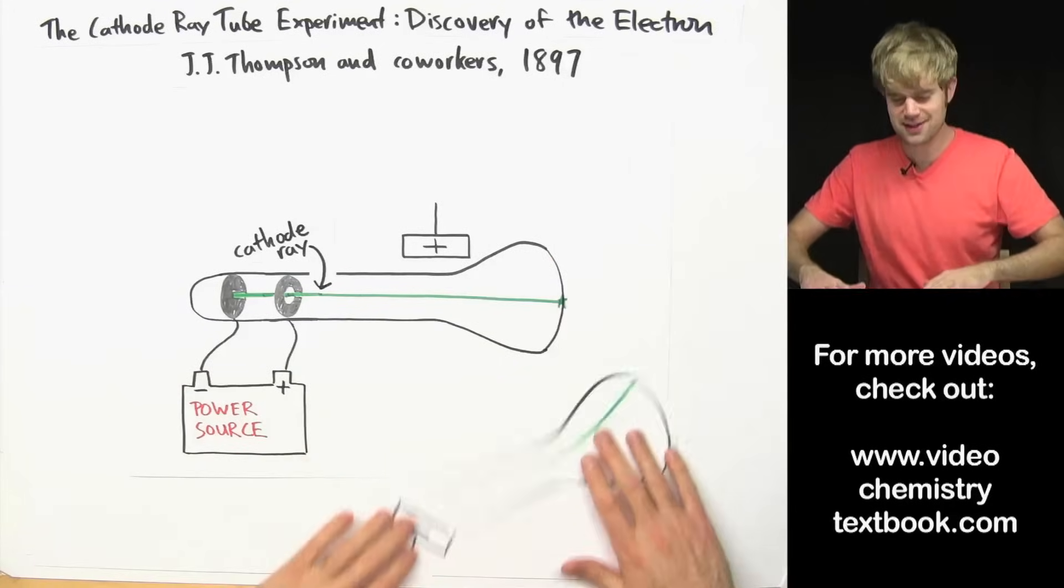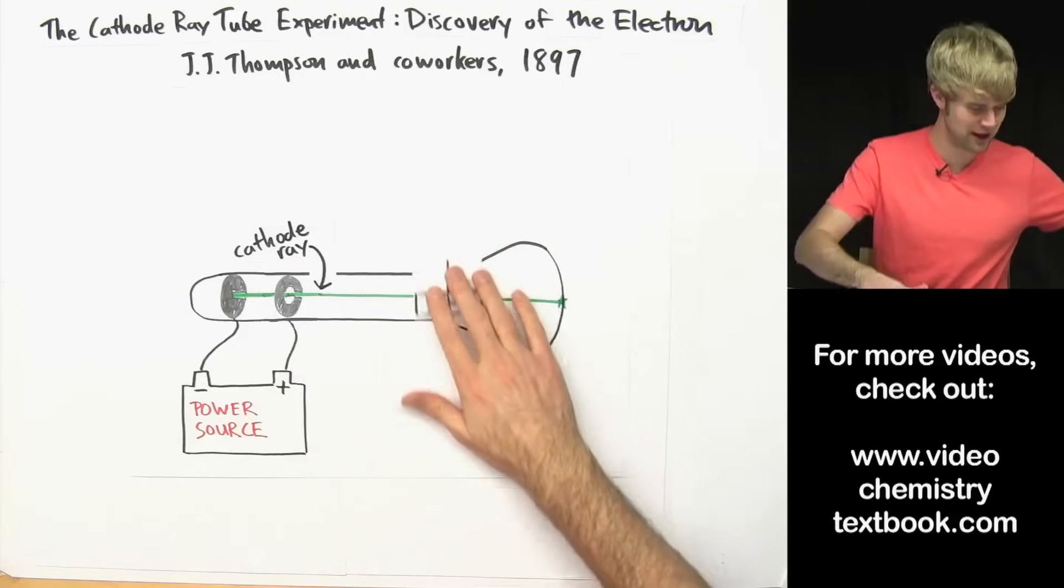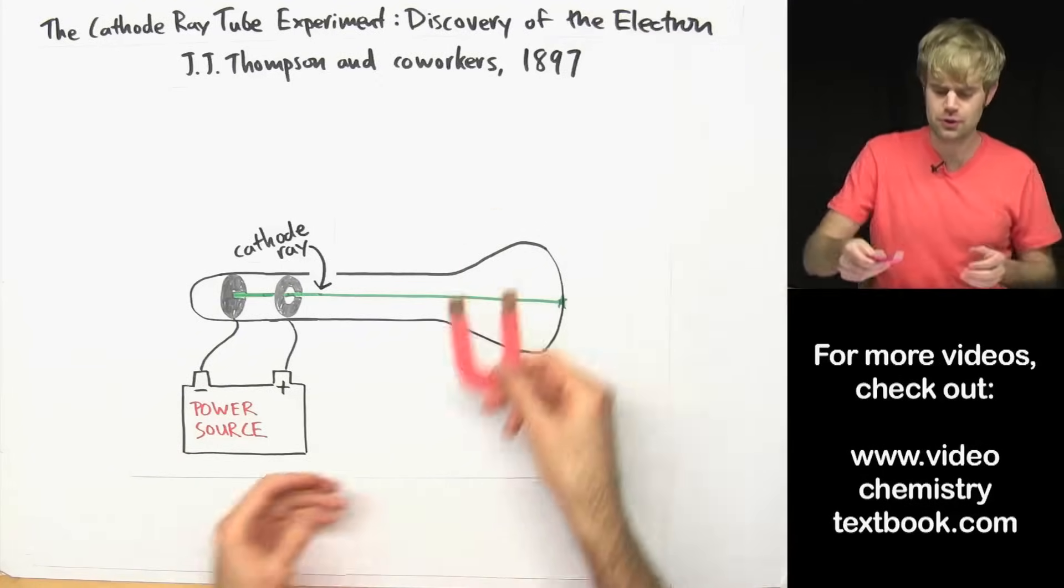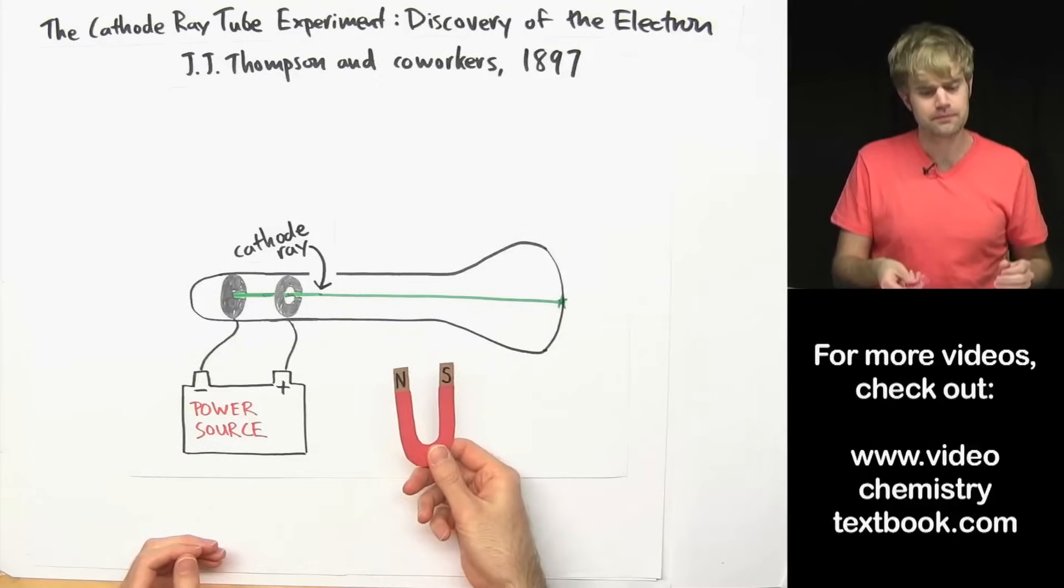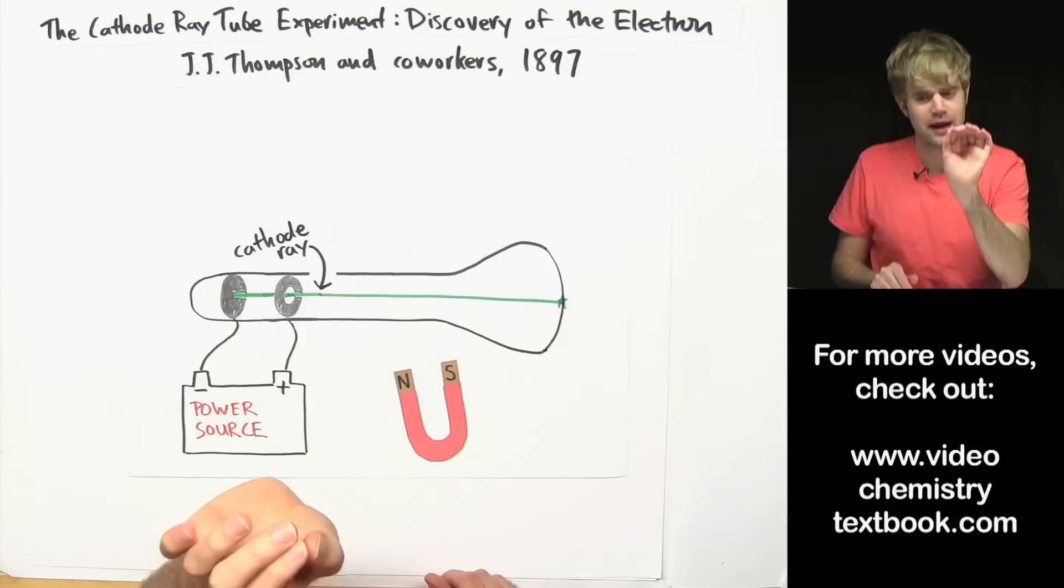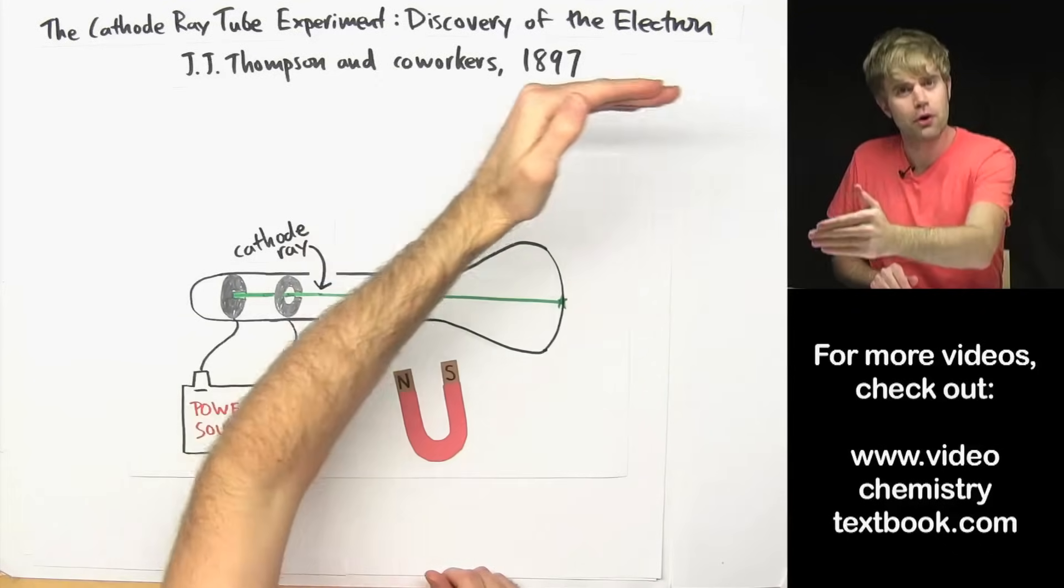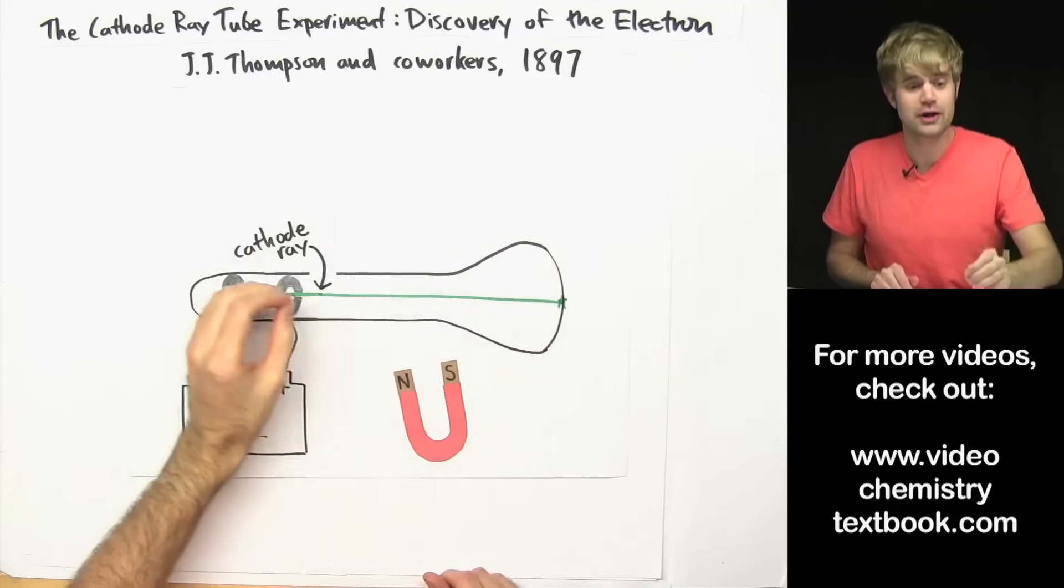But just because he wants to be very careful, he's a very careful guy, he tries to check this another way. So he uses a magnet. If something has an electrical charge and it's moving, a magnet will push it in particular directions.